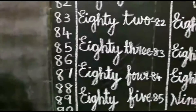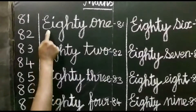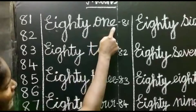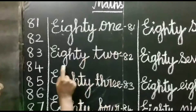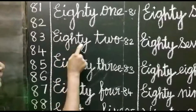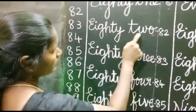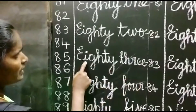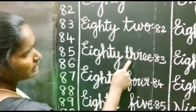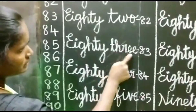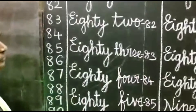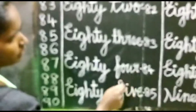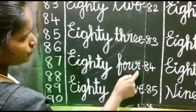Okay children, listen. Once again I will read the spelling. E-I-G-H-T-Y. 81. O-N-E. 81. 82. E-I-G-H-T-Y. 82. T-W-O. 82. 83. E-I-G-H-T-Y. 83. 84. E-I-G-H-T-Y. 84. F-O-U-R. 4. 84.